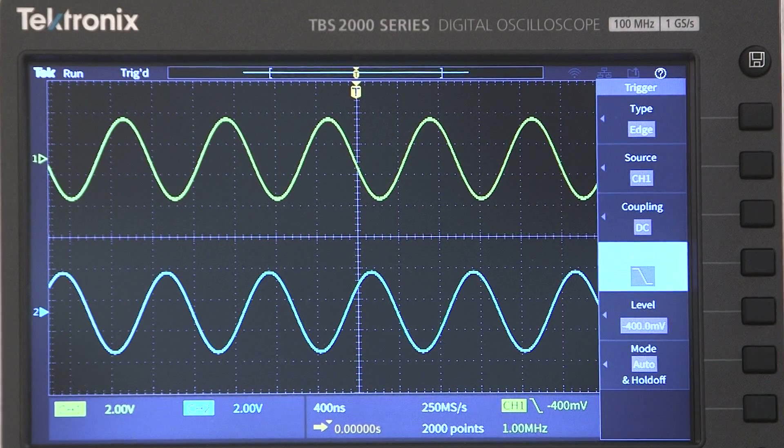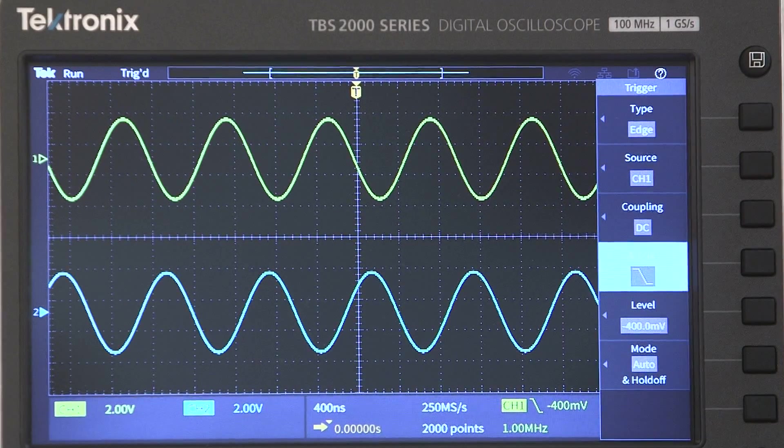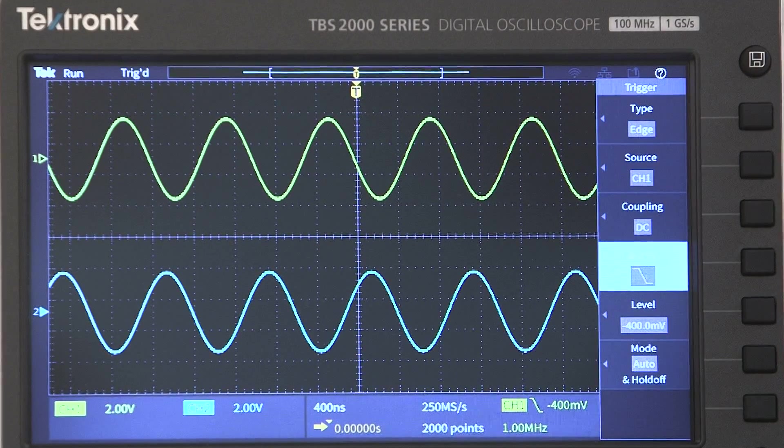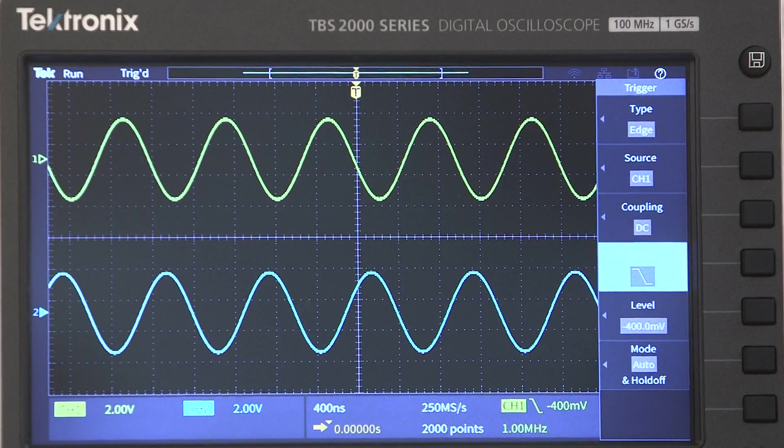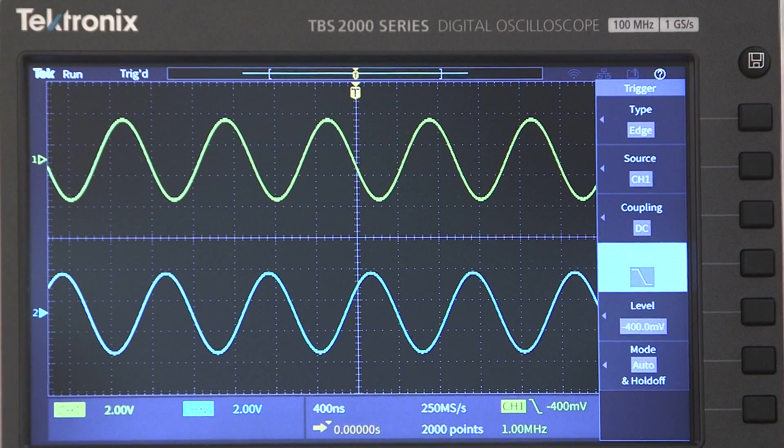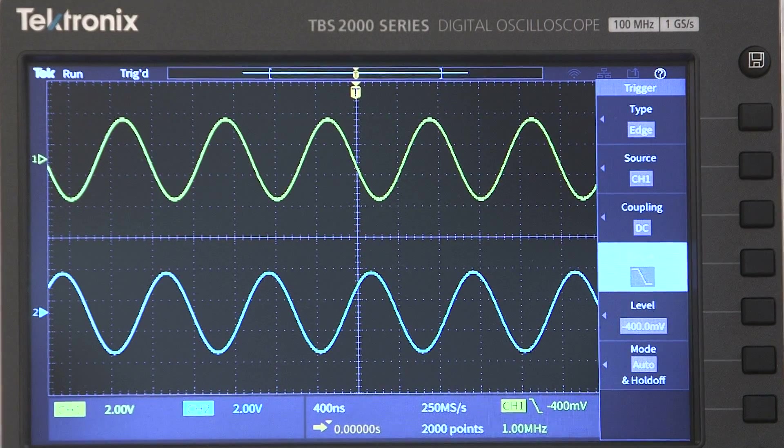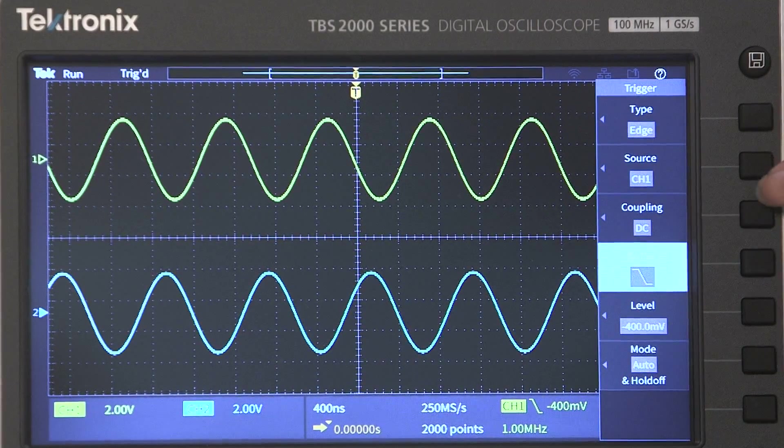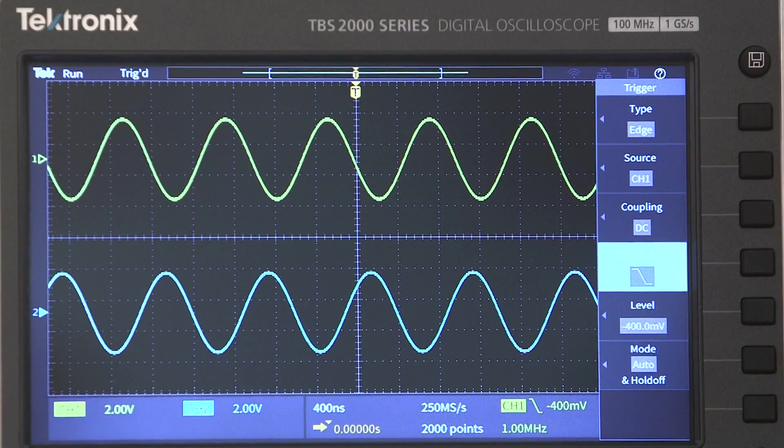With edge triggering, and this is important, the waveform is captured when the signal on the trigger source passes through a specific level on the rising or falling edge of the trigger source. Here's the source setting, the slope setting, and the level setting.